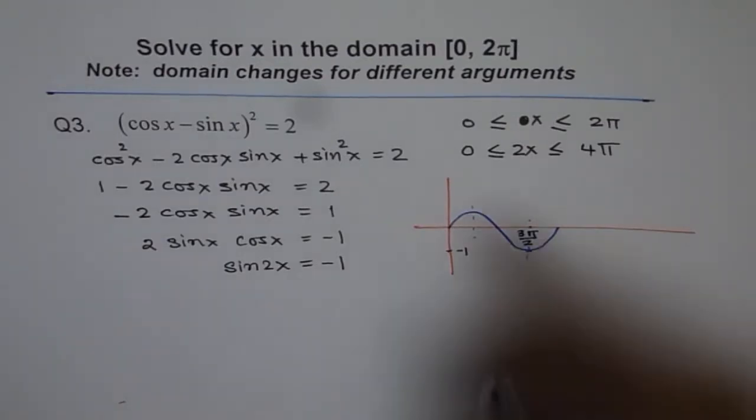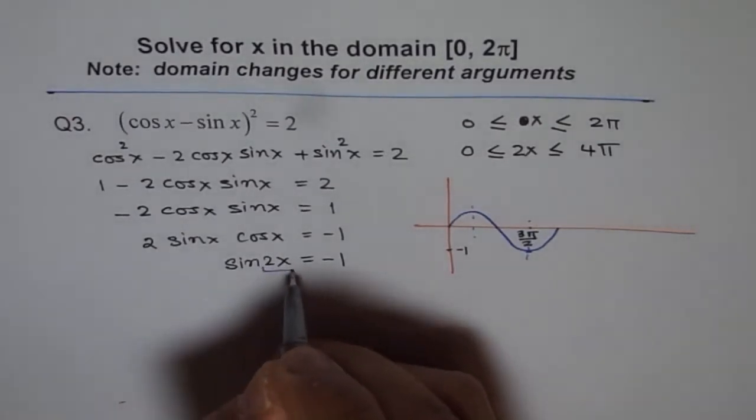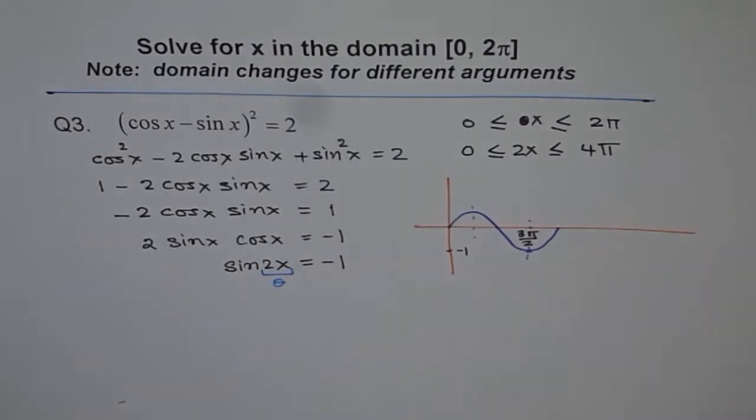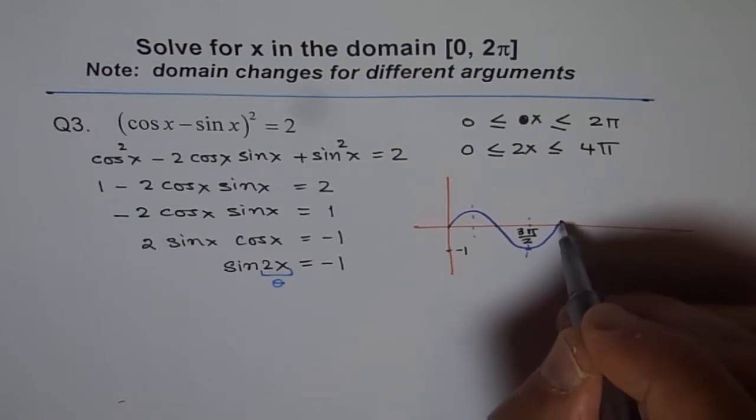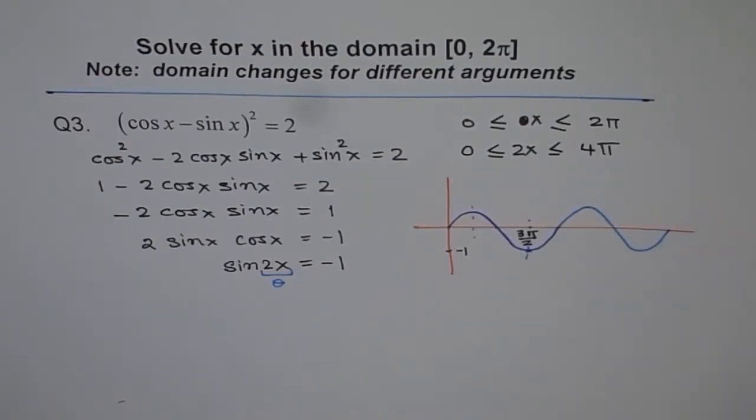For 2x we should actually be looking into a domain of 4π, not just 2π. For sin theta, because now our angle theta is 2x, not just x. Therefore, we look into the domain of 4π.